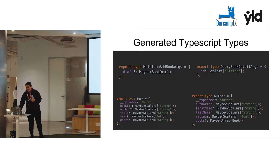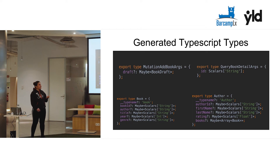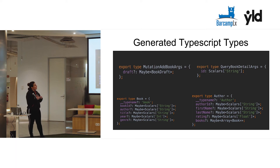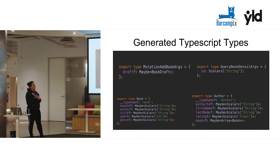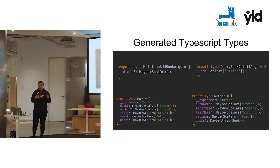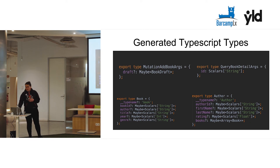Here I have some samples of generated TypeScript types with GraphQL Code Gen. As we can see, it generated types for the mutation arguments and also for the query arguments. Basically, it prepares everything for you to use TypeScript.